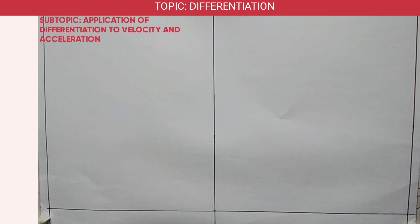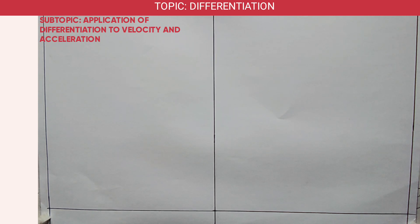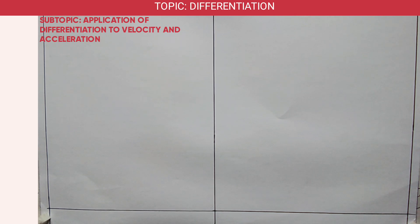Welcome learners. We are continuing with differentiation from Grade 4 mathematics, and we are going to look at the application of differentiation to velocity and acceleration. The first thing you need to know is that the distance travelled by a particle is denoted by s in this topic, while the height covered by an object is denoted by h.